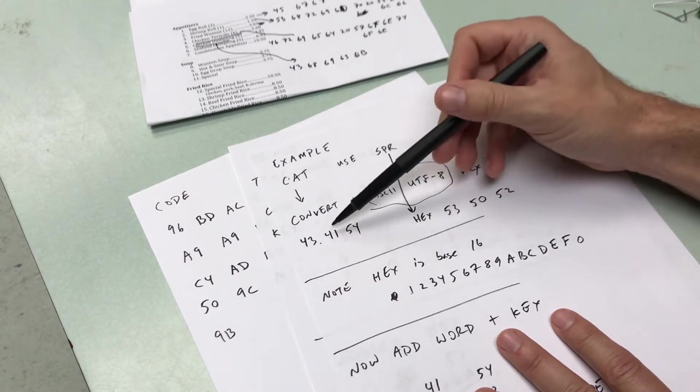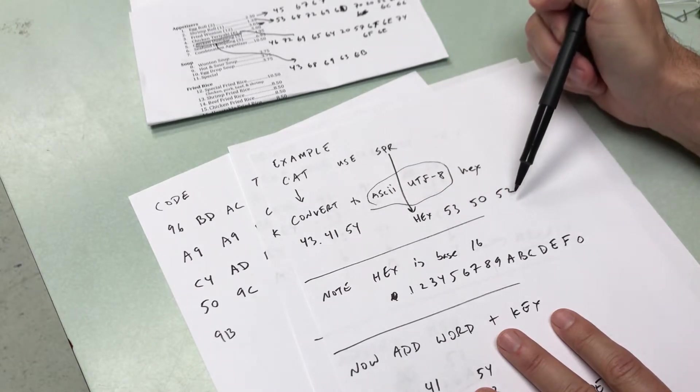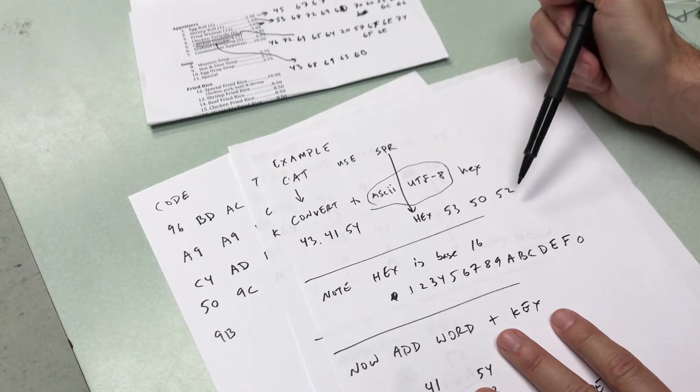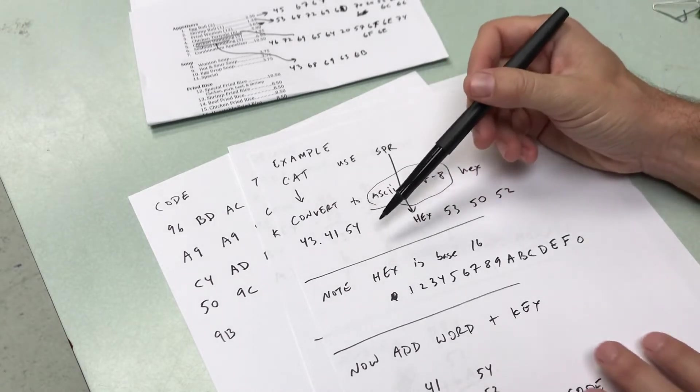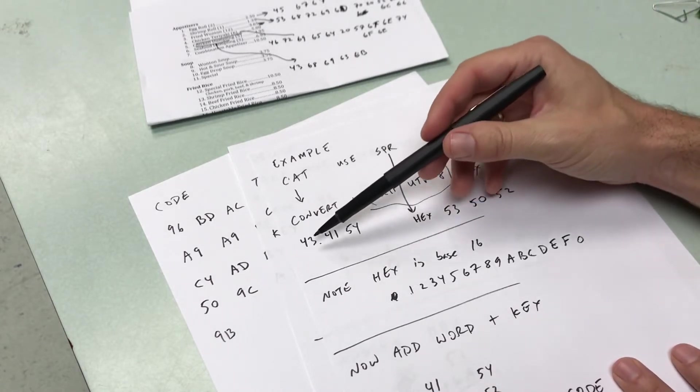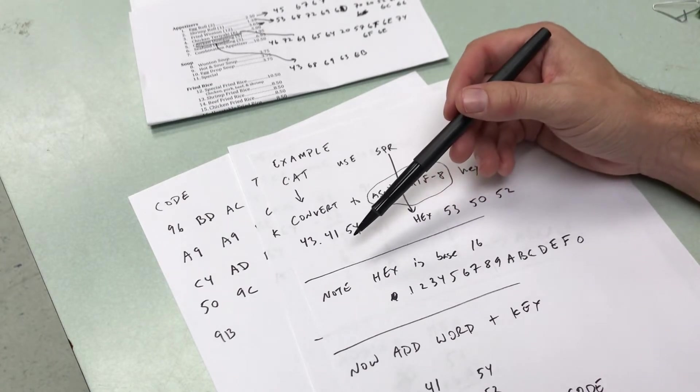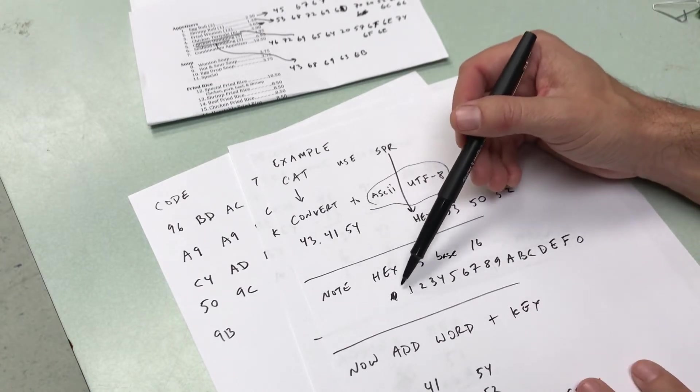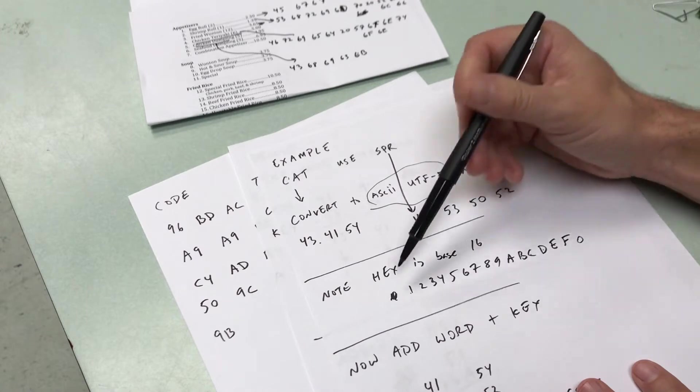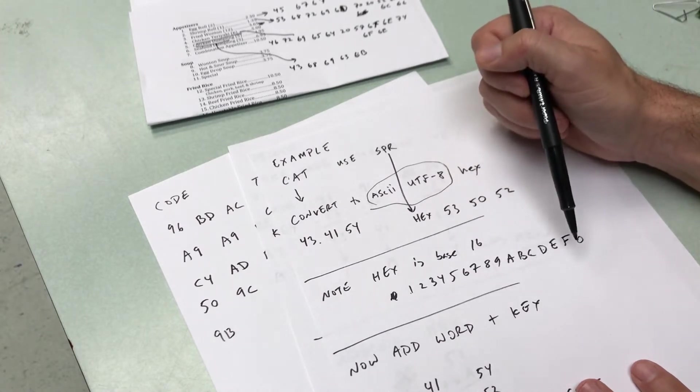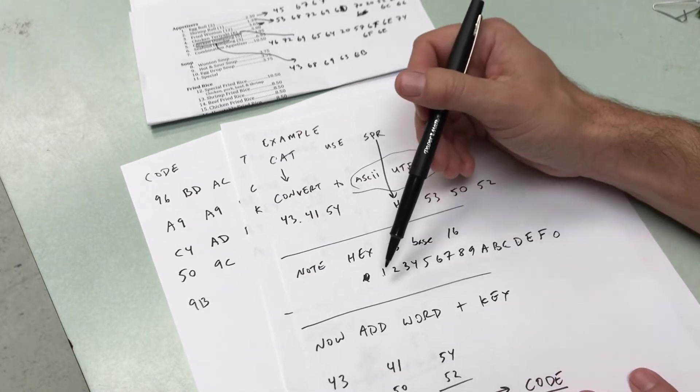What I'm going to do is add these, and then I can get my encoded message. So just a quick side note, so hexadecimal, decimal goes from 0 to 9. Hexadecimal goes from 0 to F.